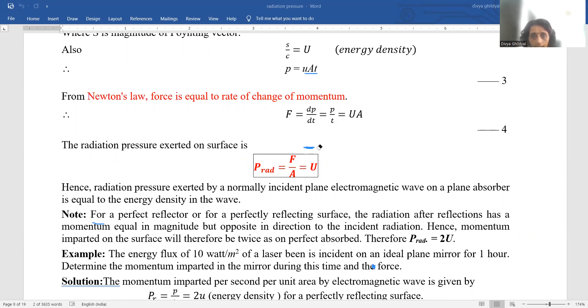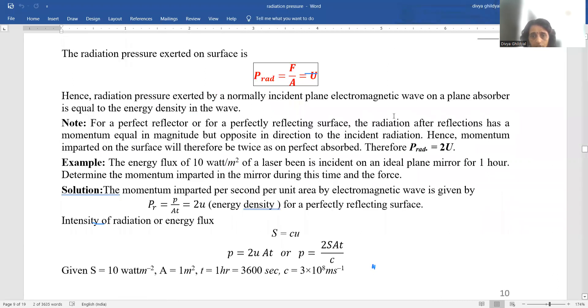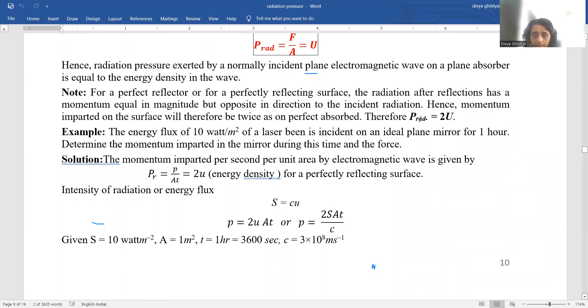Now for a perfect reflector or a perfectly reflecting surface the radiation after reflection has a momentum equal in magnitude but opposite in direction to the incident radiation. Therefore, momentum imparted on the surface will be twice as on the perfect surface absorbed. So total radiation pressure will be equal to 2 times of u.